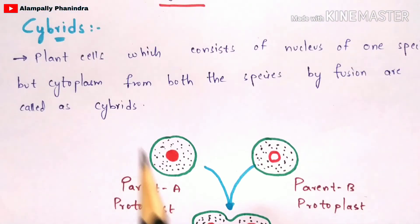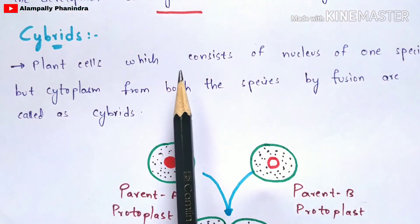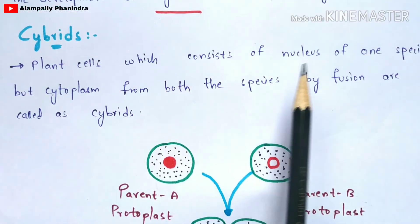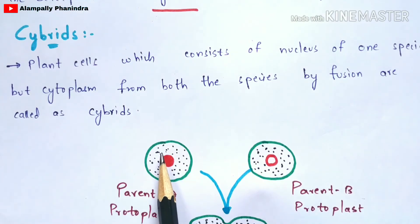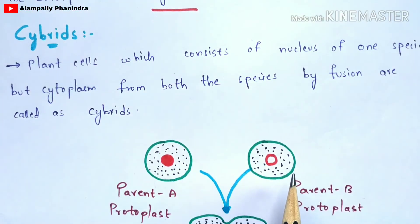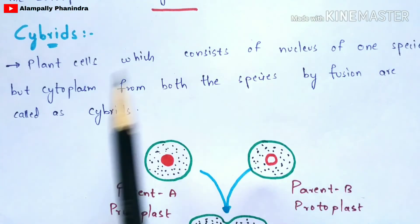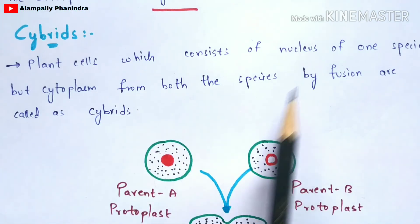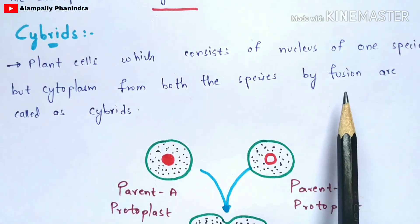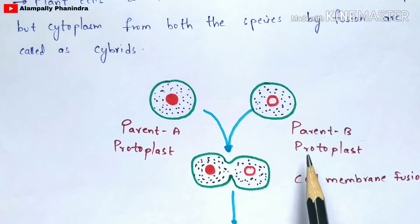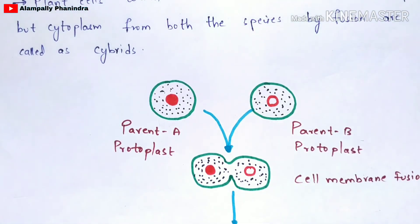Now we can understand the definition of cybrids properly: plant cells obtained consist of the nucleus of only one species — either Parent A or Parent B — but the cytoplasm from both species, because both species contribute cytoplasm through the fusion process. These are called cybrids. So the formation of somatic hybrids and somatic cybrids has been covered.